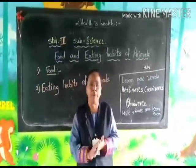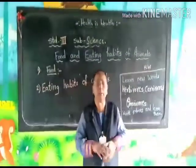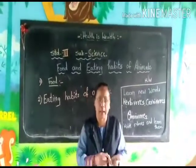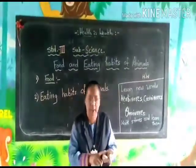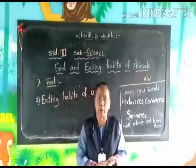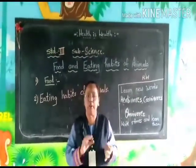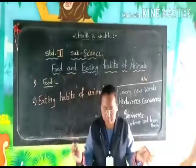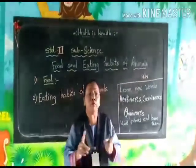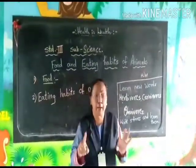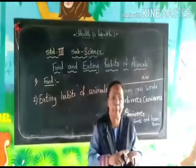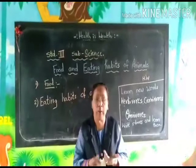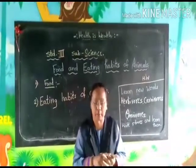Omnivores. Omnivores means eating everything — both plants and flesh. They will eat both plants and animals. They are called omnivore animals. Examples: the first example is man, then rat, dog, cat, and so on.